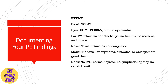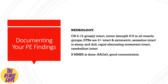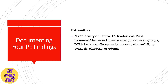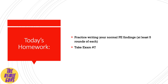Make sure you review how to document normal findings for HEENT, neuro, respiratory, cardiovascular, abdomen, MSK, and extremities. Practice typing those over and over again until it's second nature. For today's homework: practice writing your normal physical exam findings, writing out each system at least five times. That should give you a solid foundation. Then take exam number seven, go over it, see where you made your mistakes, and make sure you don't make those in the future.